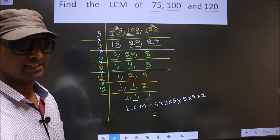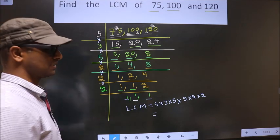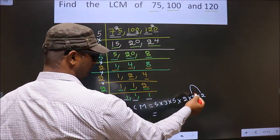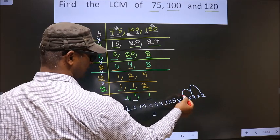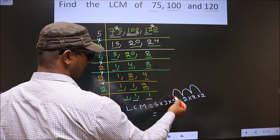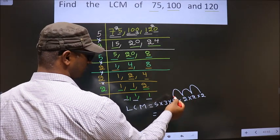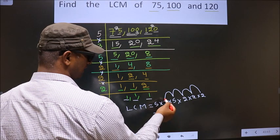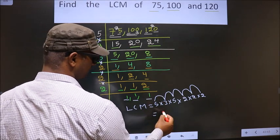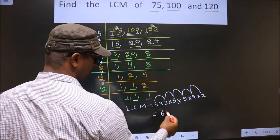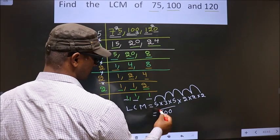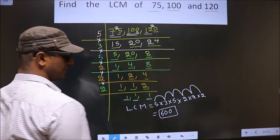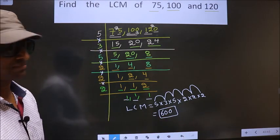Let us multiply these numbers: 2 into 2 into 2 is 4, 4 into 2 is 8, 8 into 5 is 40, 40 into 3 is 120, 120 into 5 is 600. So 600 is our LCM.